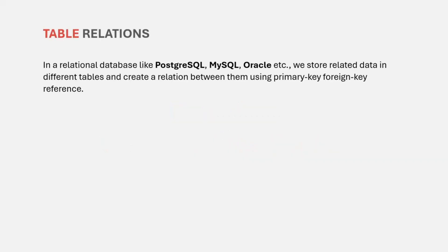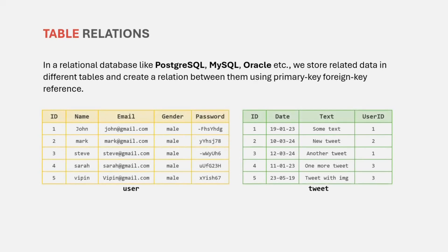In a relational database like PostgreSQL, MySQL, Oracle, etc., we store related data in different tables and create a relation between them using primary key and foreign key references. For example, let's say we have a user table and a tweet table. A user will make one or more tweets. In the user table, we have user-related data. In the tweet table, we have tweet-related data — the tweet ID, the date when that tweet was made, the tweet text, and also the user ID of the user who made that tweet. For example, this first tweet was made by the user with user ID 1.